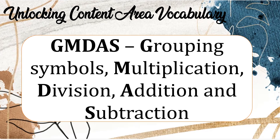Gymnast stands for: G for grouping symbols, M for multiplication, D for division, A for addition, and S for subtraction.